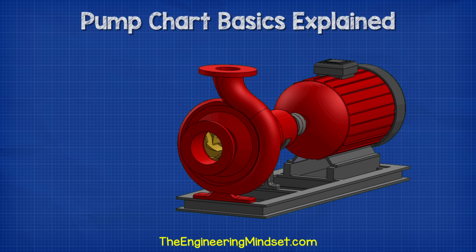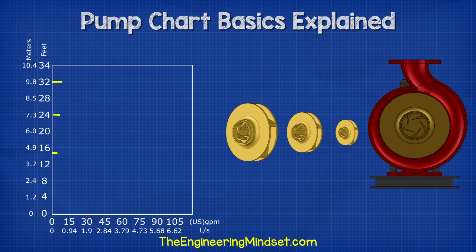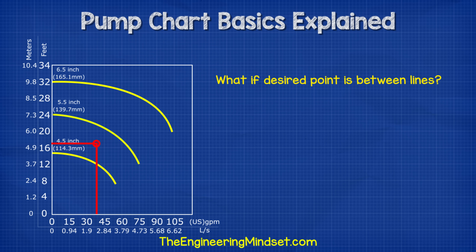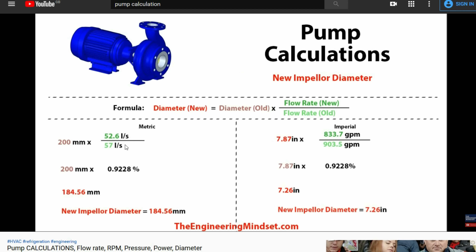Impeller size. With centrifugal pumps, we can often change the size of the impeller. The diameter of the impeller will change how much water can be moved. So on some charts, you'll see multiple performance curves which will give us the performance details of the pump for different diameter impellers. For example, 30 gallons per minute for a 4.5 inch impeller gives us around 13 feet of head, but if we use the 5.5 inch impeller, then we would get around 22.5 feet of head. In some instances, our required flow rate and head pressure might fall between the two impeller diameter lines — in such cases, we can often machine the impeller down to the required size to get a better match. You should ask your pump manufacturer or pump specialist to carry out this service, and the performance of the pump will then need to be calculated.